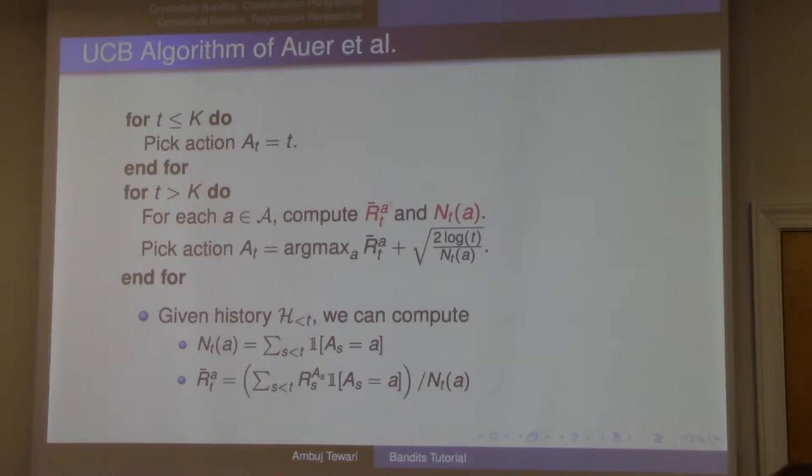This is the heart of the algorithm. Once you have at least one observation from each arm, what do you do? For each arm, you can compute its empirical mean. So r̄ₐᵗ is just—what is Nₜ(a)? Nₜ(a) is the count. So far in your history, how many times have you tried action a? And r̄ is the empirical mean. Just restrict your attention to those rounds where you took action a, collect and add up all the rewards, and divide by the count.